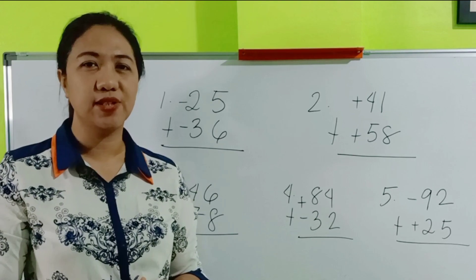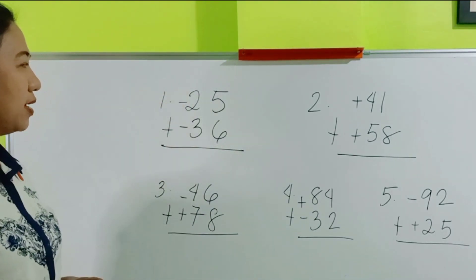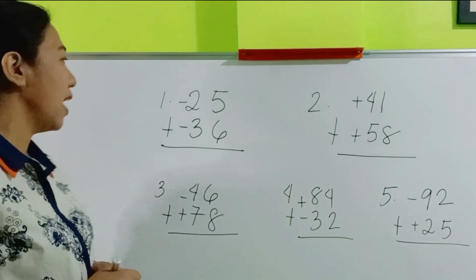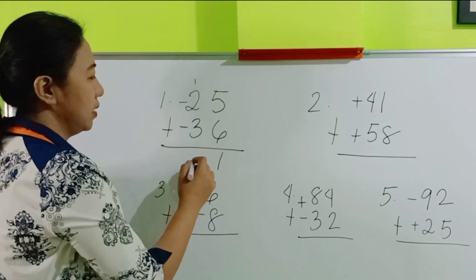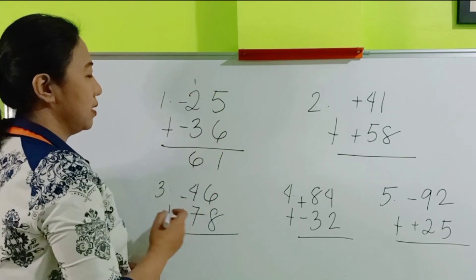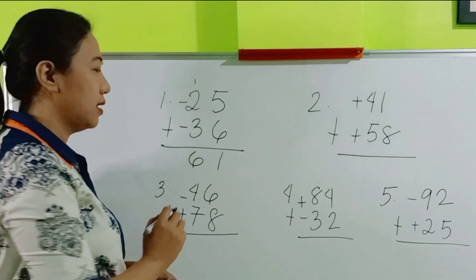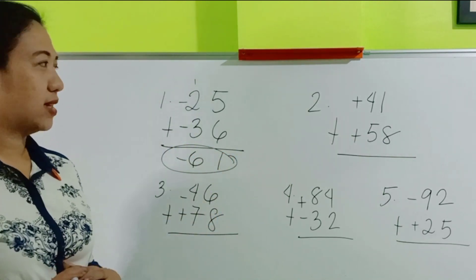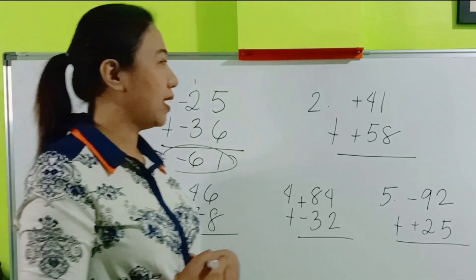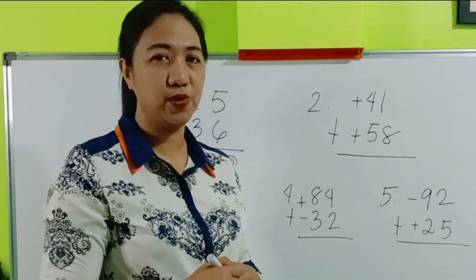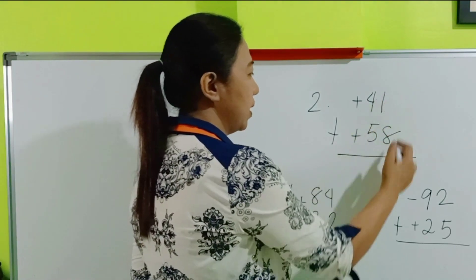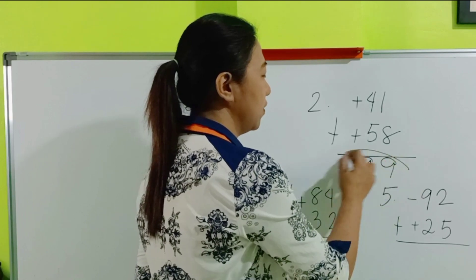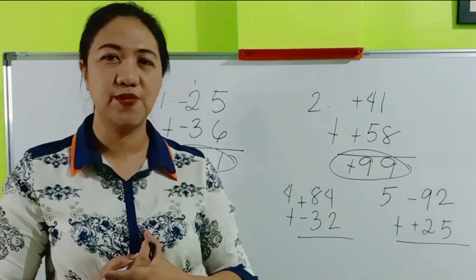It's time to answer. Number 1 — they are both negative numbers, so we follow SSA or same signs add. 5 plus 6 is 11, and then 6, making the answer negative 61. Number 2 — they also have the same signs, so we add. 8 plus 1 is 9, and then 9, with the common sign being positive. Therefore, the answer is positive 99.